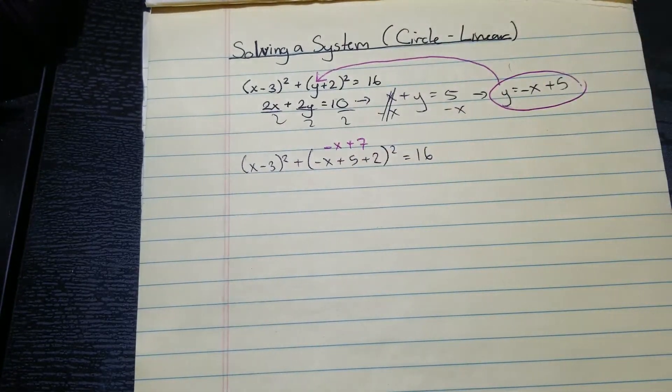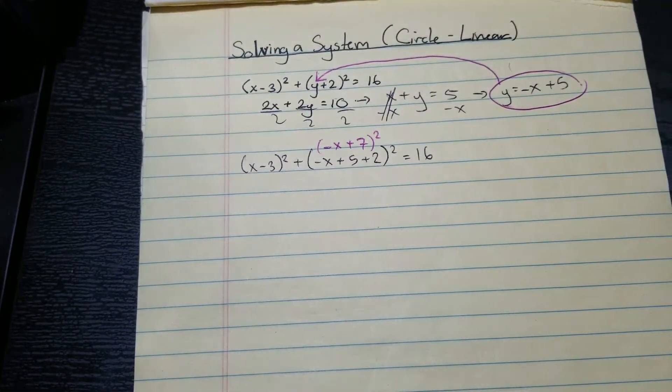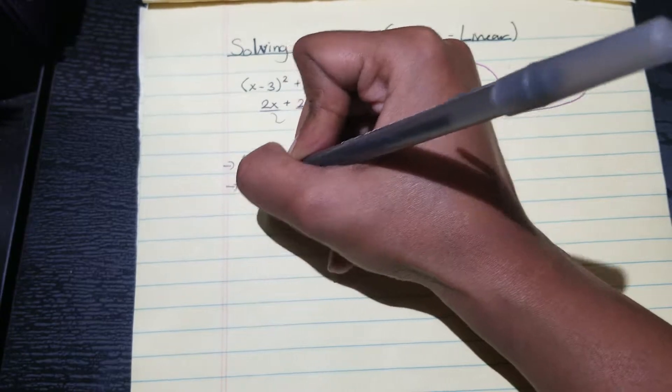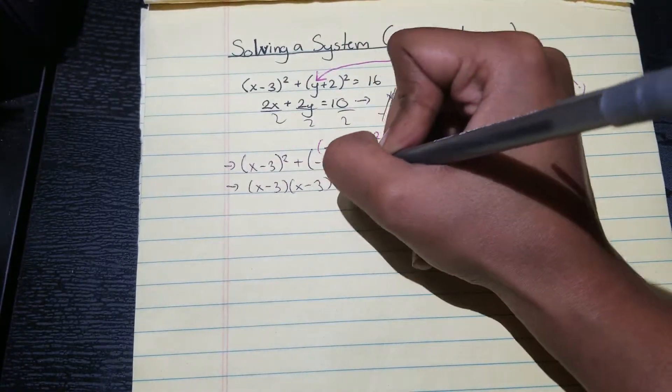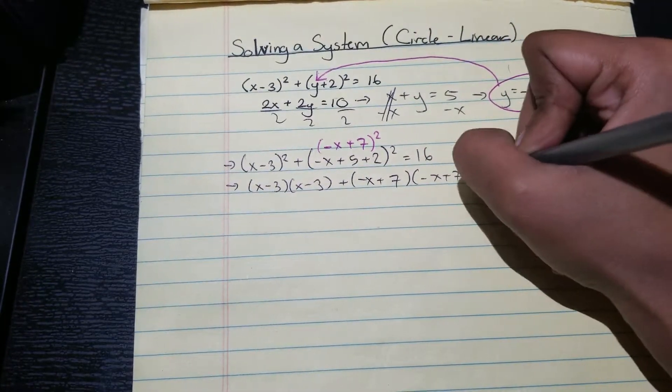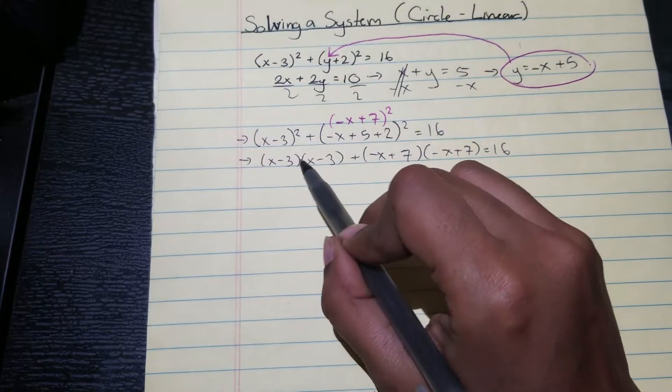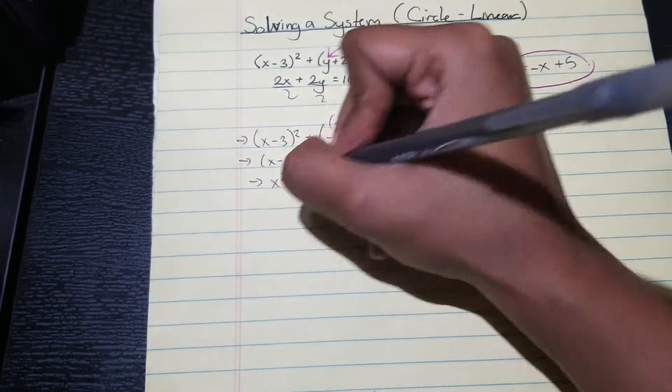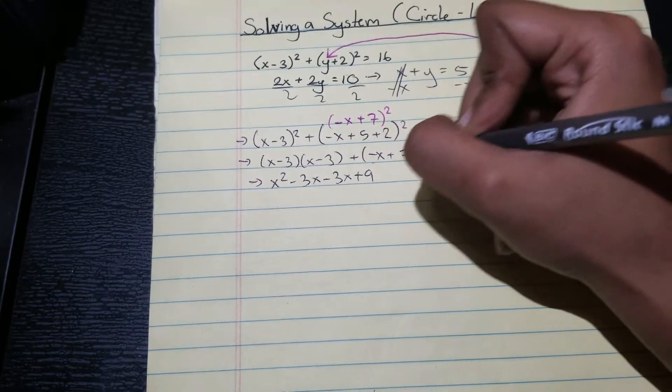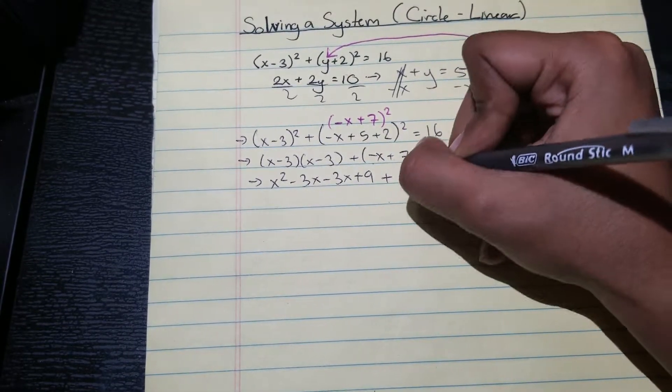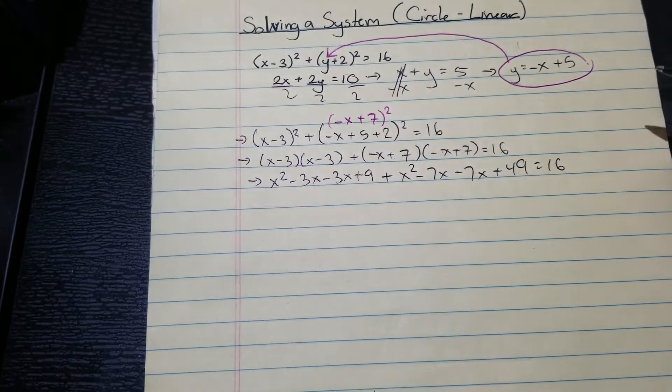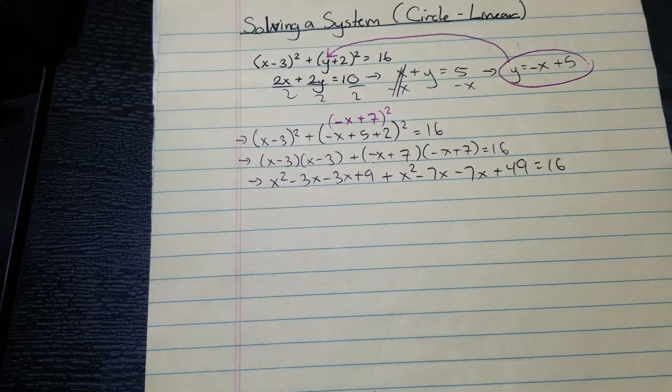All right, so now let's start solving for x. So we're going to be expanding this. So x minus three times x minus three, plus it's going to be negative x plus seven times negative x plus seven equals 16. We're going to FOIL, so this times this, this times this, so that's going to give us x squared minus three x minus three x plus nine, and then this times this, this times this, plus x squared minus seven x minus seven x plus 49 equals 16.